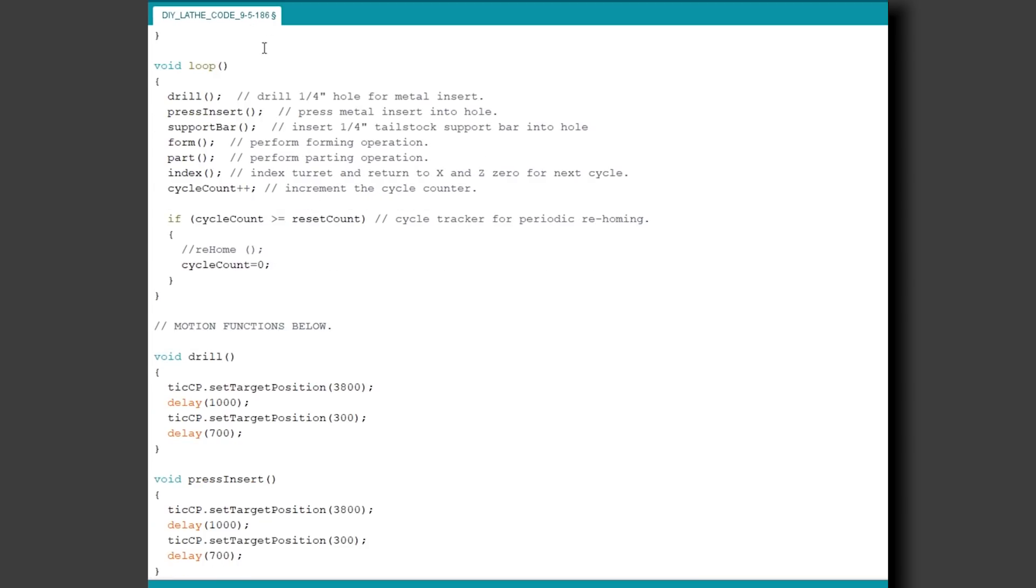I have the main loop organized as functions to keep it clean looking and easy to follow for you guys. I think these pretty well speak for themselves at this point, but drill the hole, press the metal insert into that hole, insert the tailstock support bar, forming operation, parting operation, and then withdraw the support bar and index the turret for the next cycle. Here we increment the cycle counter. And this if statement keeps track of if cycle count is greater than or equal to reset count, and then here it will perform that periodic re-homing and reset the cycle count to zero.